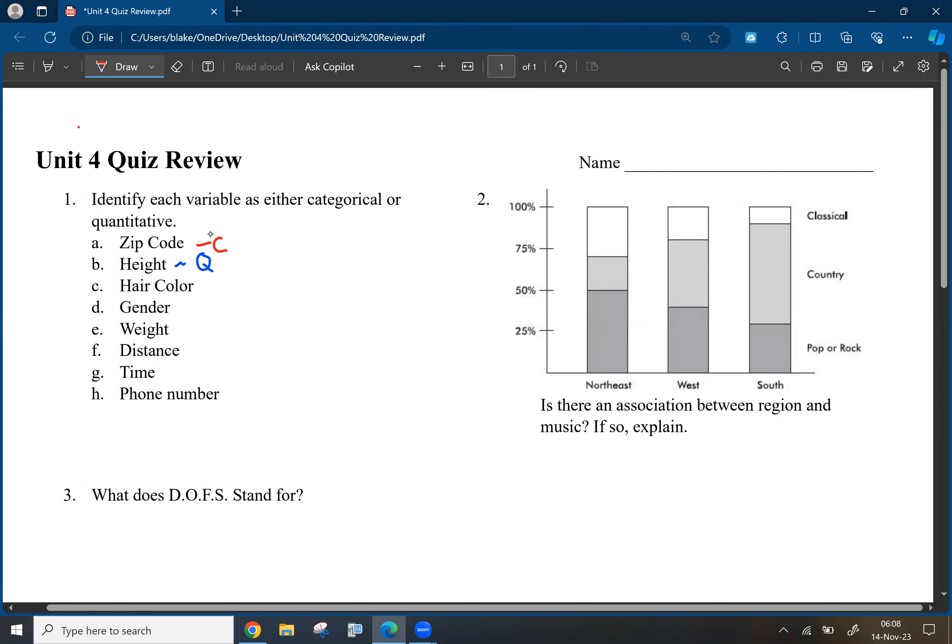Hair color. Hair color is categorical, right? That can be separated in categories like blonde, brunette, etc. Gender. Gender is also categorical.